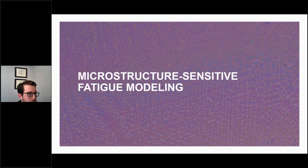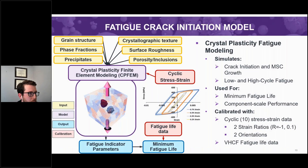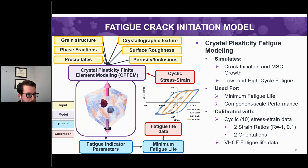Our crystal plasticity-based fatigue crack initiation model can capture inputs like microstructure features such as grain size, phase fraction, precipitates, and grain orientation, as well as extrinsic features like surface roughness, porosity, and inclusions, which are especially important in additive manufacturing. We then generate a digital twin of the microstructure. This crystal plasticity model can be calibrated with cyclic stress-strain data, and from this we can predict the fatigue indicator parameters which help us compare competing microstructures or loading scenarios to optimize for fatigue. Further, with limited fatigue life data, we can calibrate to our minimum life model, which can help predict actual fatigue life of materials as a function of loading scenarios and microstructure, with far fewer experiments.